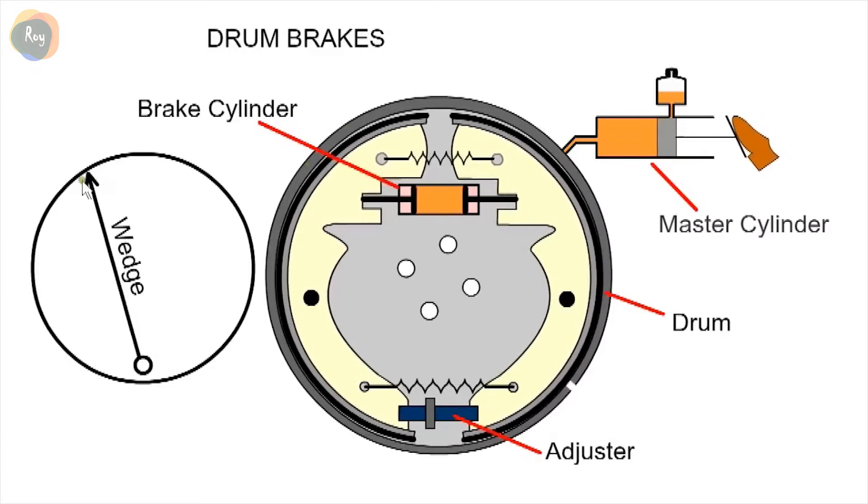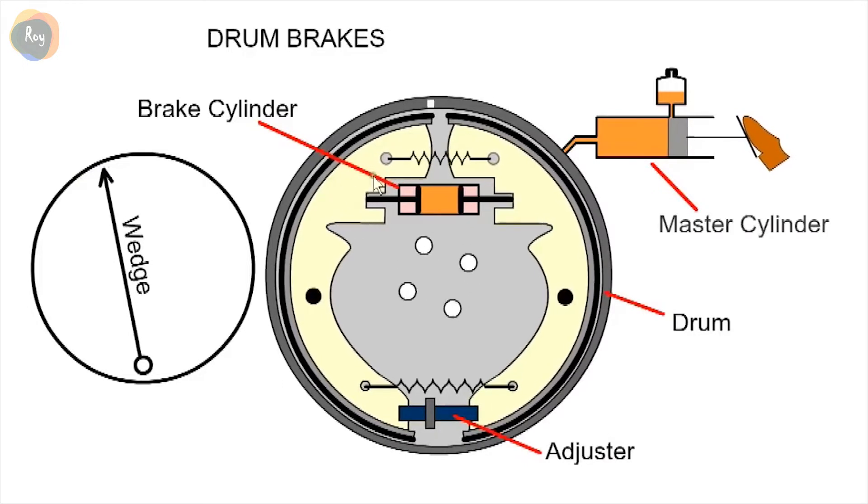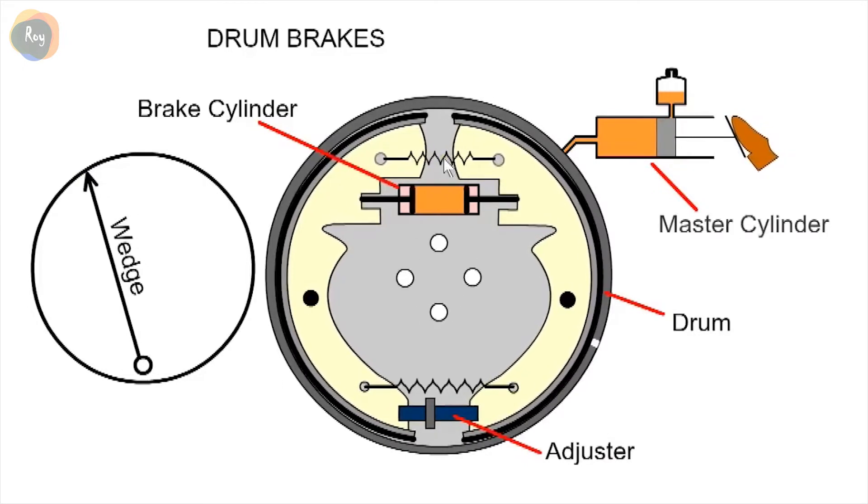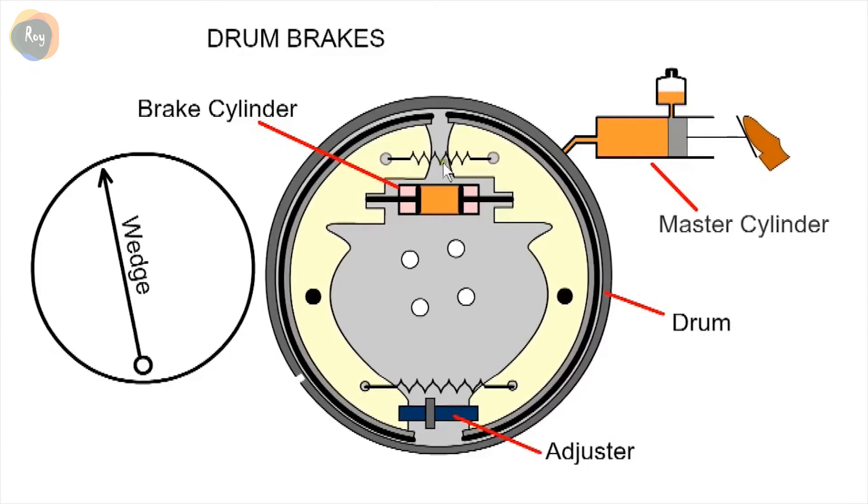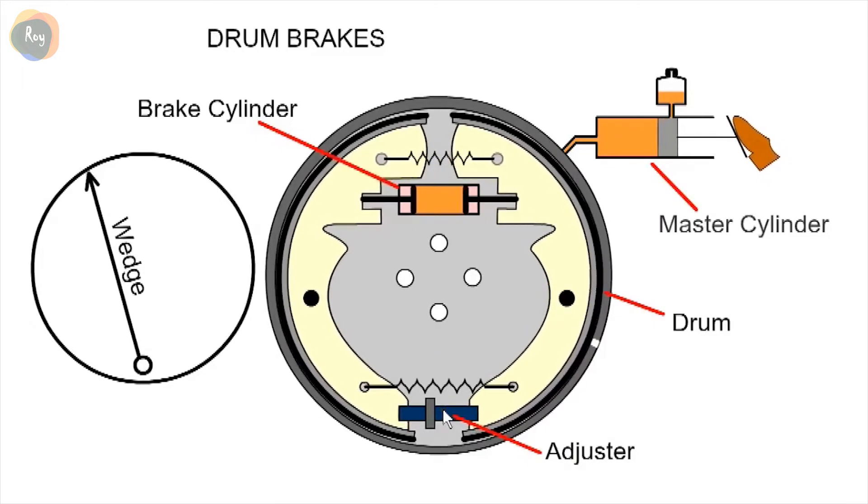When this brake shoe contacts the drum, there is a wedging action which helps to increase braking force, but it also requires a spring to retract it. When the brake pads wear, the adjuster is used to alter the bottom anchor position.